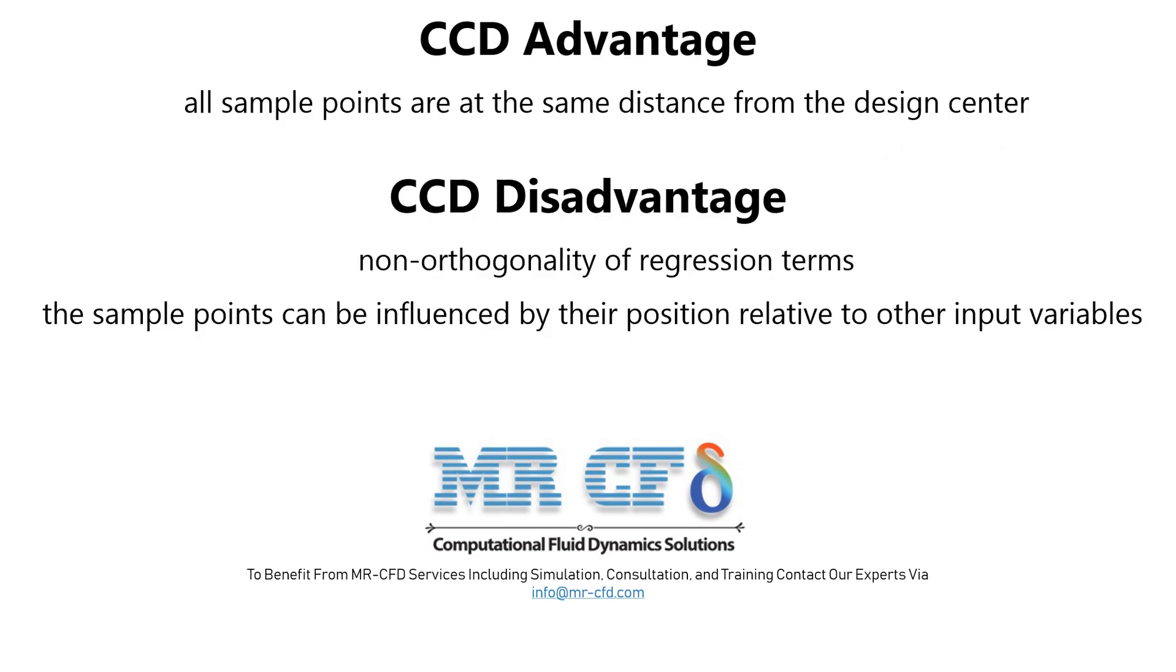The main advantage of the Central Composite model or CCD is that the variance estimation or forecast is the same for both points at the same distance from the design center. That is, according to the figure that we see, all sample points are at the same distance from the design center or the midpoint and have the same variance or deviation.